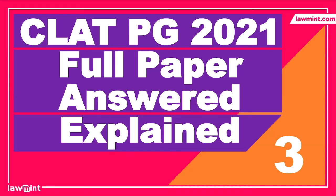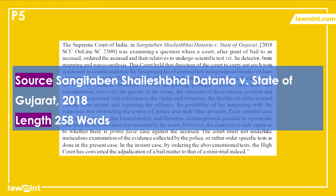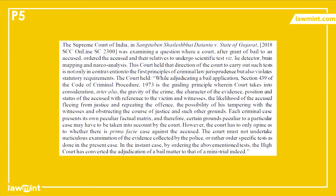Hello all, this is Sanjay from lamin.com. Welcome to Part 3 of this 10-video series where we will be looking at the CLAT PG 2021 previous question paper in its entirety. In this particular part we will be covering the fifth and sixth passages and the 12 questions associated with these two passages. Passage 5 is taken from a case titled Sangeeta Bhai Shailesh Bhai Datanta versus the State of Gujarat from the year 2018, and the length of this passage is 258 words. You can pause the video here and read the passage, or go to lamin.com and download the previous question paper.